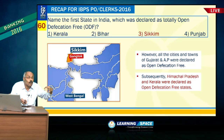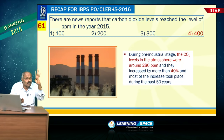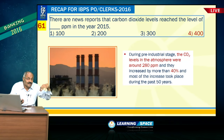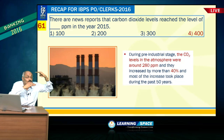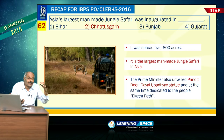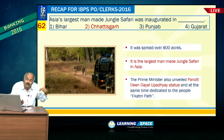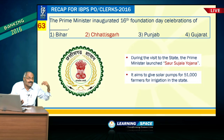Carbon dioxide levels in 2015 touched 400 ppm; pre-industrial levels were 280 ppm. Asia's largest man-made jungle safari was inaugurated in Chhattisgarh by the Prime Minister. India is celebrating the birth centenary of Pandit Deen Dayal Upadhyay — born in Uttar Pradesh — and Nanaji Deshmukh — born in Maharashtra. The Prime Minister also launched Saur Sujala Yojana, to run pump sets using solar energy.